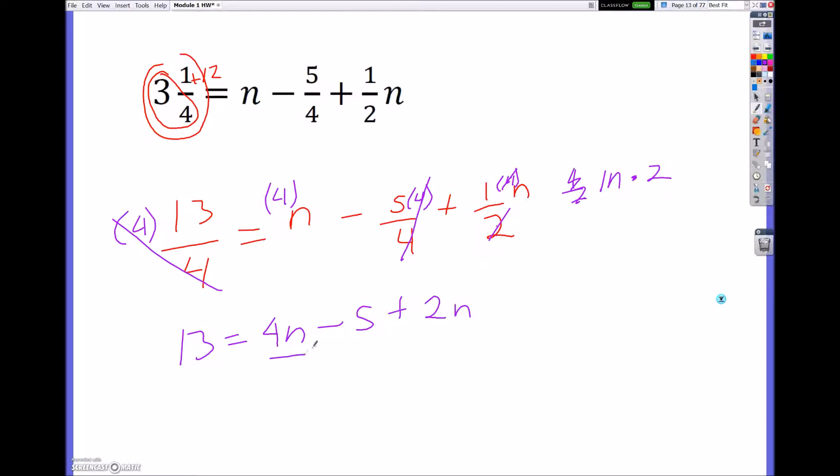So now when I combine these, I have a 4n and a 2n. So I'm going to have 13 equals 6n minus 5. I'm going to add 5 on both sides to get 18 is equal to 6n. Divide both sides by 6. To get n is equal to 3.